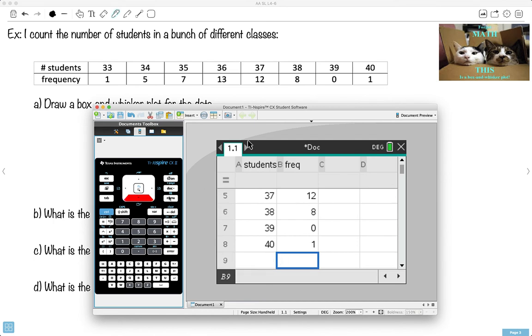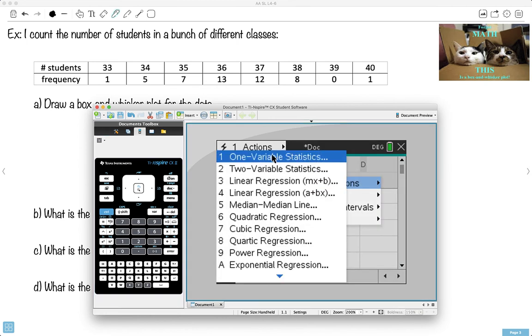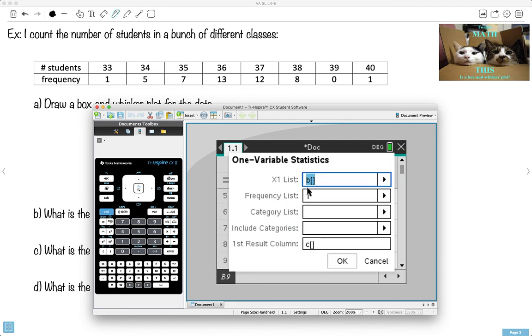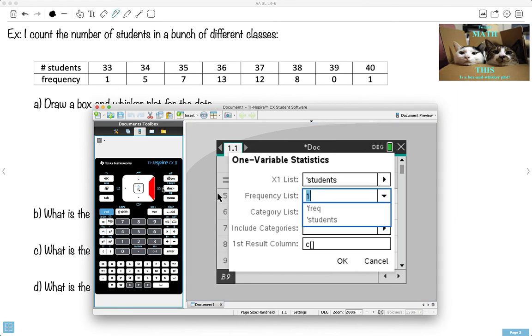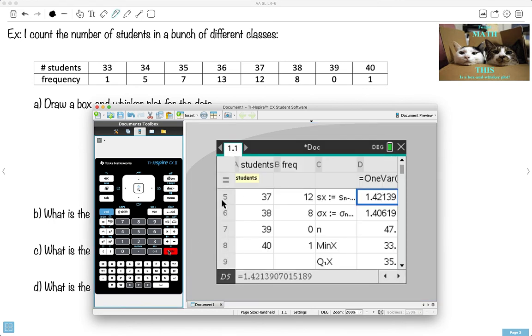So what do I do now? I go to menu, at least for mine. I go to stats, and I say give me a calculation. I want one variable statistics. Even though there's two columns, it's still one variable. The other one's just frequency. I say give me students for the x. And for the frequency, give me the frequency. And I say go, do it. Now I give you my five number summary.